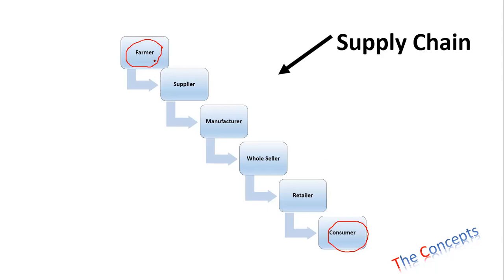Typically, farmers are producing something and giving it to raw material suppliers. They are dealing B2B — business to business. Then these suppliers supply things to the manufacturers, who add more value to the products and turn them into finished products. They give it to the wholesaler, who buys things from manufacturers in bulk, and the wholesaler further sells them to the retailer, and then the retailer sells it to the consumer. Supply chain mostly ends at the consumer level because things are consumed there.